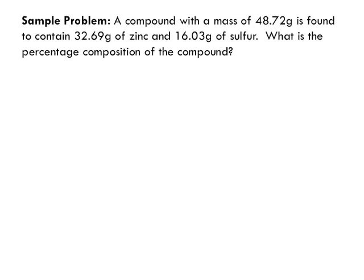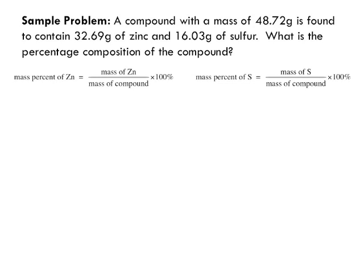You take how much you have of zinc and divide it by the total mass—just like getting your mark. Mass percent of zinc is the mass of zinc divided by the mass of the whole compound times 100. To find the mass percent of sulfur, same thing: take the mass of sulfur and divide it by the mass of the compound.